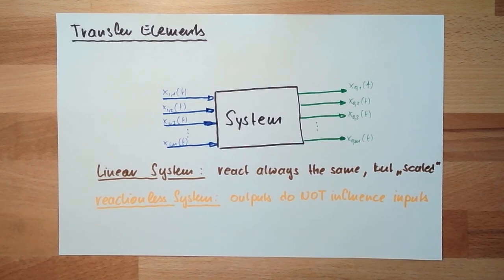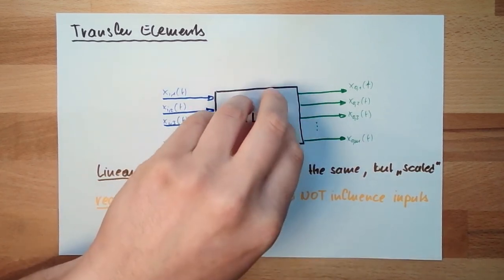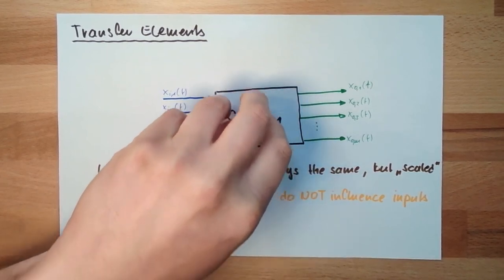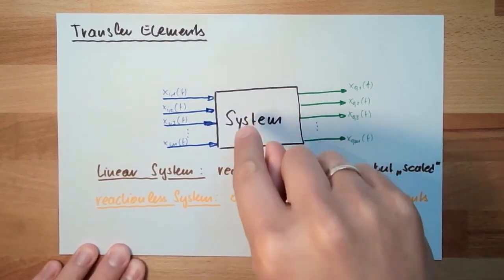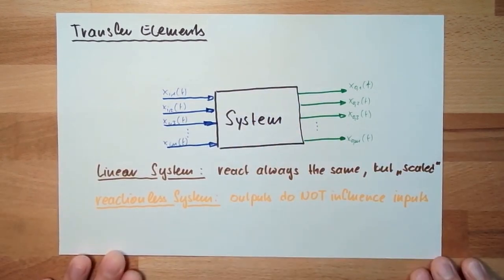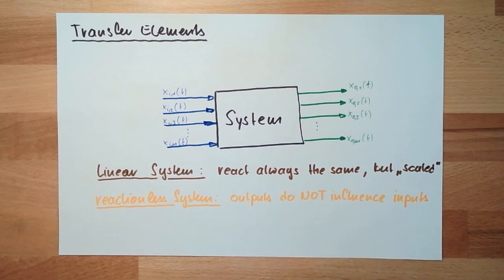Next time, we want to reach a mathematical description of this system here. Next time, we are talking about this mathematical behavior or this mathematical background. For this time, thank you very much for listening and goodbye.